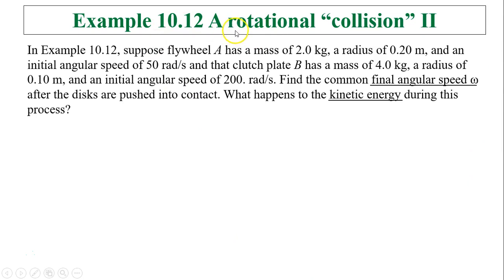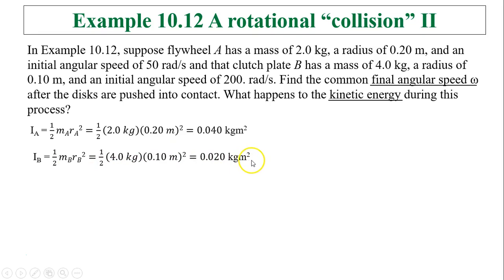Let's take a look at another situation of rotational collision, situation number two. In the previous example, suppose now you have some numbers. Flywheel A has a mass of 2 kilograms, radius 0.2 meters, and an initial angular speed of 50 radians per second. And clutch plate B has a mass of 4 kilograms, radius 0.1 meters, and an initial angular speed of 200 radians per second. Find the common angular speed omega after the disks are pushed into contact and explain what happens to kinetic energy during this process. So we know IA, because it's a disk, equals one half mA rA squared. Plug everything, you have 0.04 kilograms meter squared. Similarly, we can figure out moment of inertia for IB, that's 0.02 kilograms meter squared.